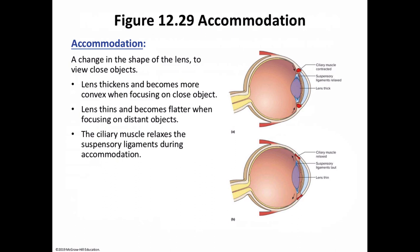For the near point of vision — the maximum bulge the lens can achieve — in young adults with emmetropic vision, the near point is approximately 10 centimeters or four inches from the eye. It's closer in children and gradually recedes with age, which is why you may see older people holding a newspaper at arm's length. The gradual loss of accommodation with age reflects the lens's decreasing elasticity. In many people over 50, the lens is non-accommodating in a condition known as presbyopia, meaning old person's vision.